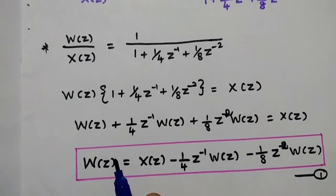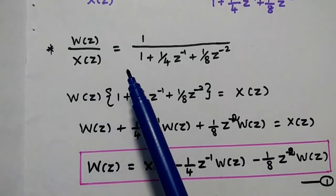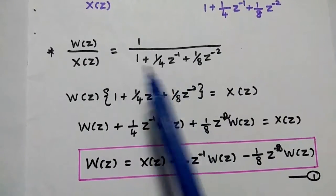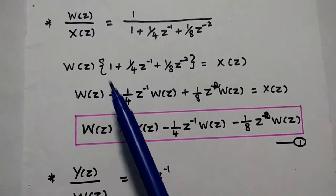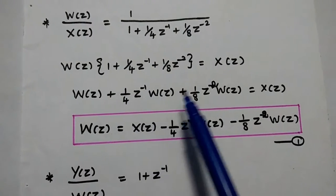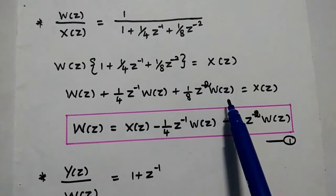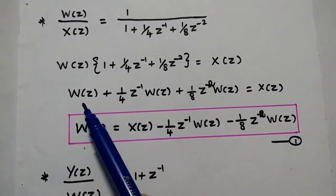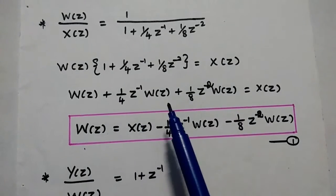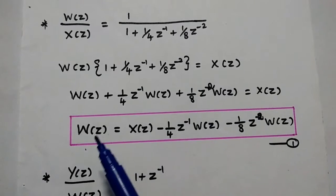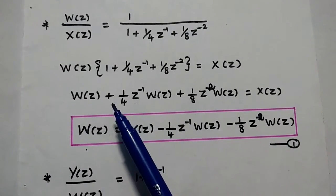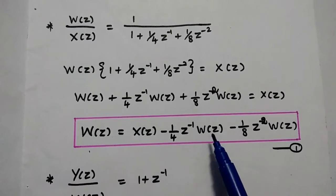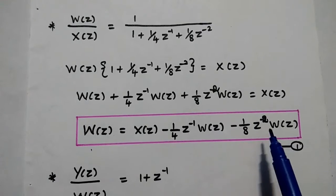Taking each value separately: W(Z)/X(Z) = 1 / (1 + 1/4·Z⁻¹ + 1/8·Z⁻²). Cross-multiplying gives: W(Z) + 1/4·Z⁻¹·W(Z) + 1/8·Z⁻²·W(Z) = X(Z). Keeping W(Z) on one side and moving all other terms to the right with opposite signs: W(Z) = X(Z) − 1/4·Z⁻¹·W(Z) − 1/8·Z⁻²·W(Z). Consider this as the first equation.